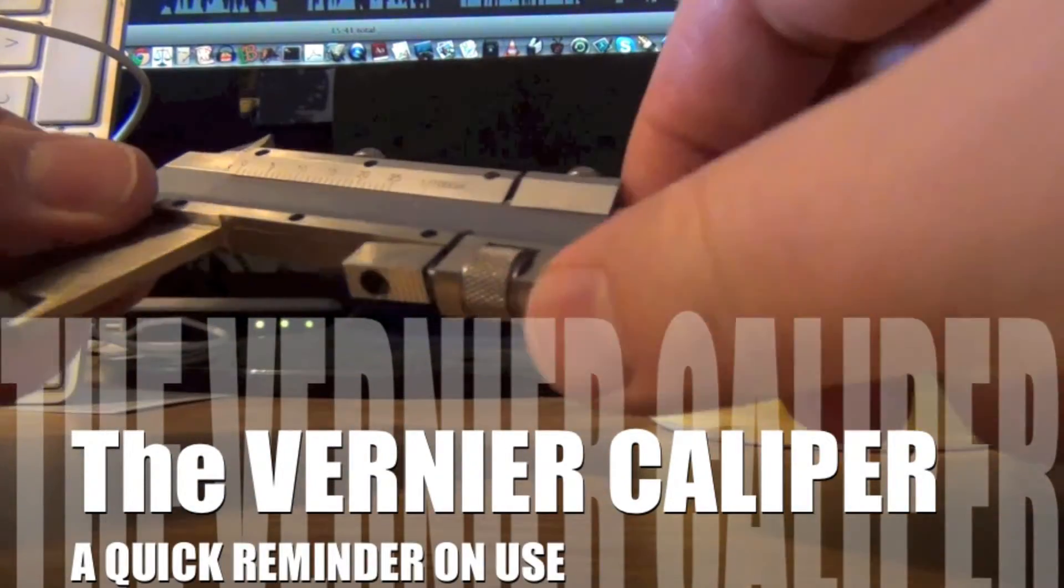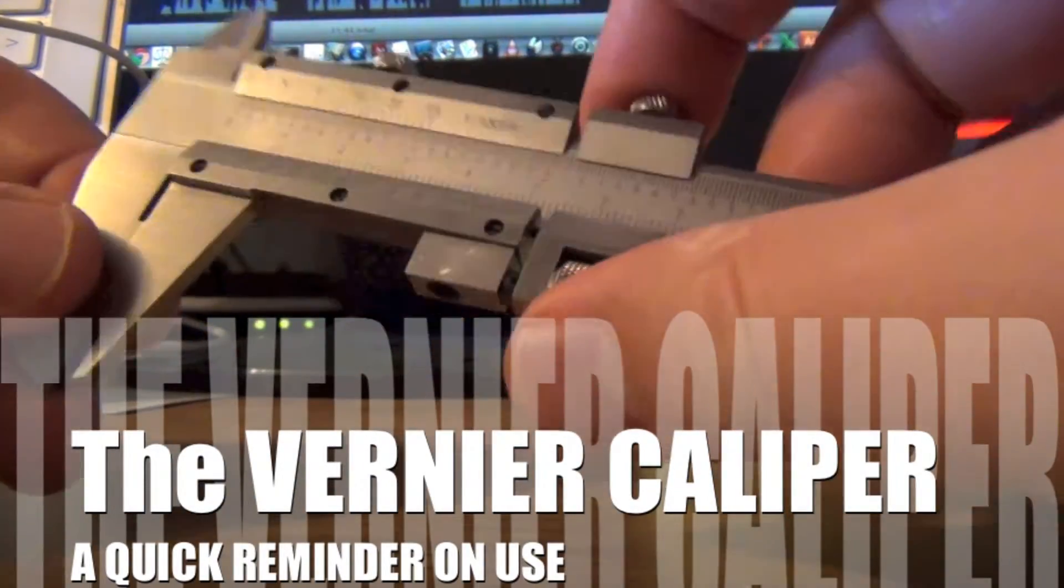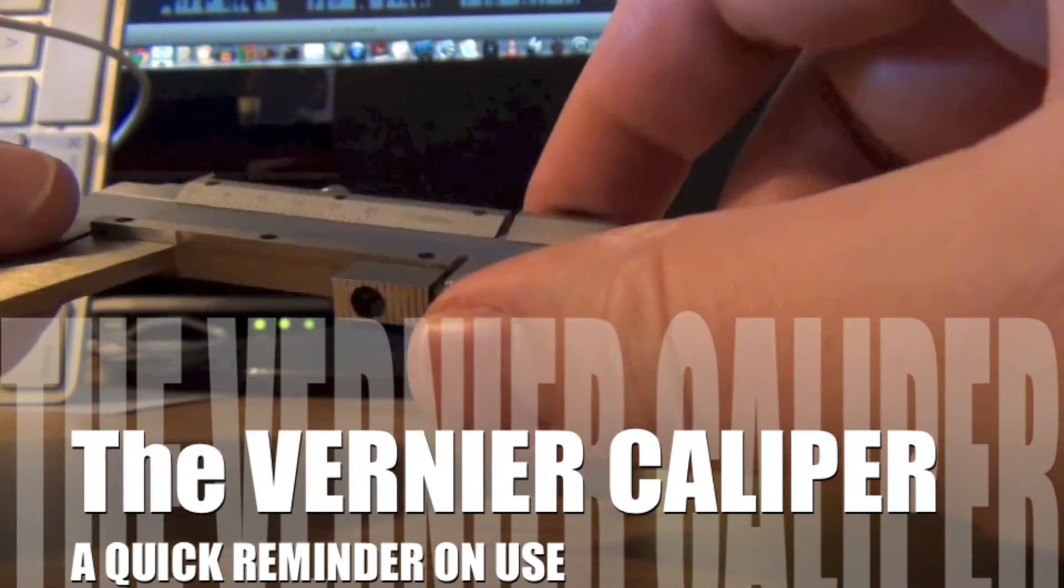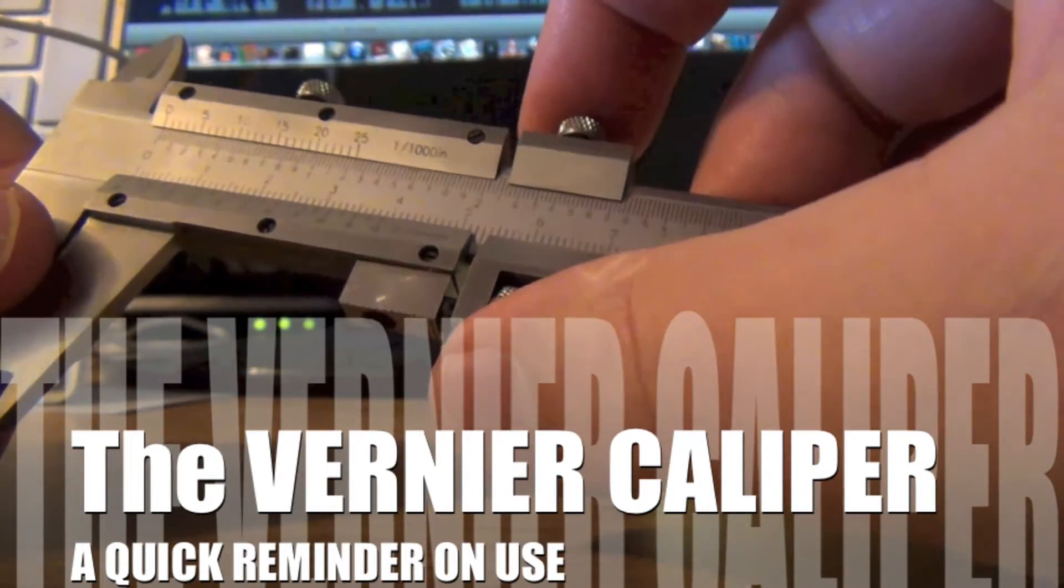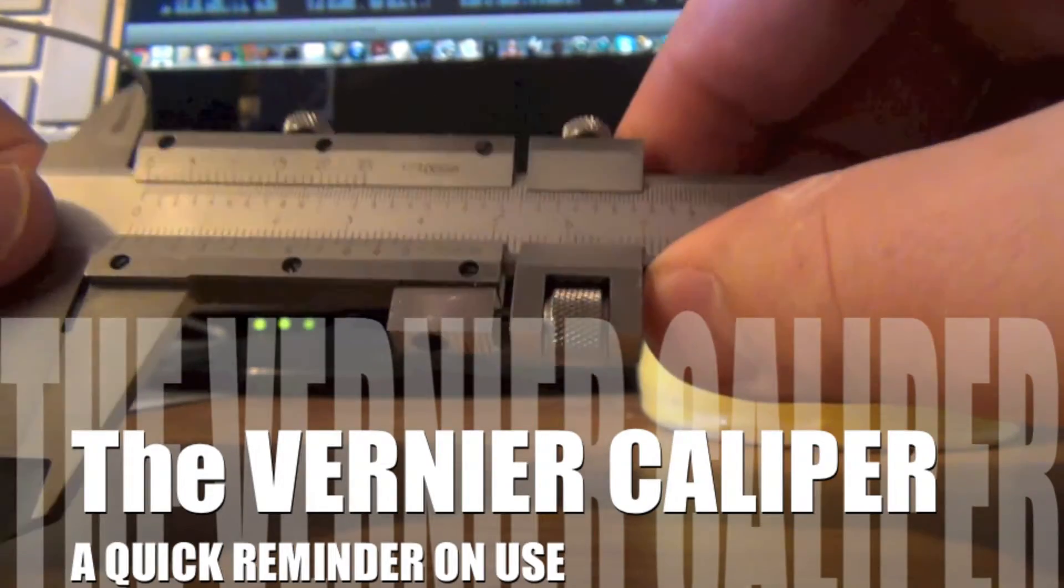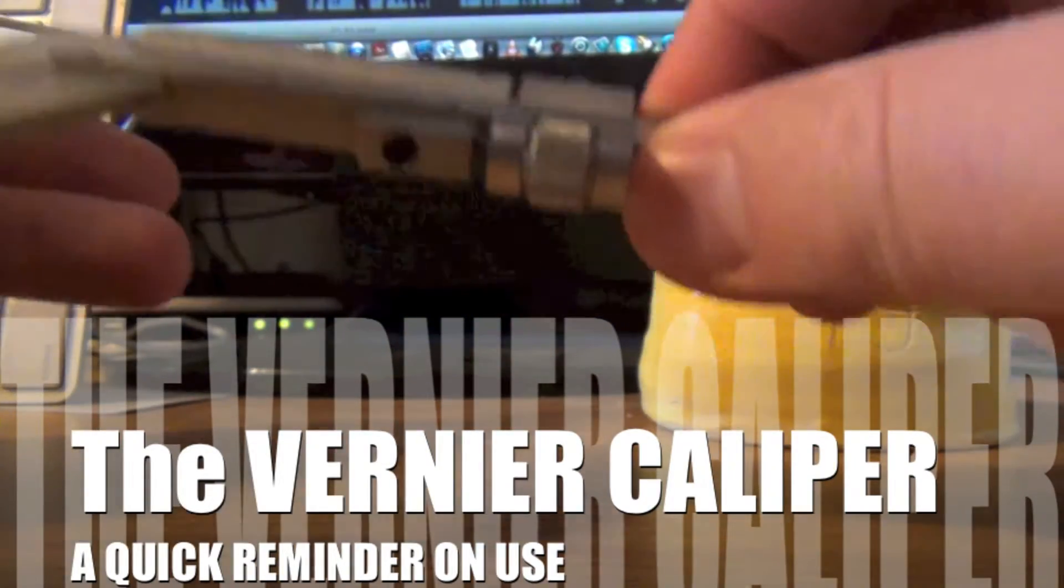This is just a quick lesson on vernier calipers. Remember that the vernier is going to increase the precision of a measurement compared to say a ruler. To get an even higher precision measurement we'd want a micrometer.